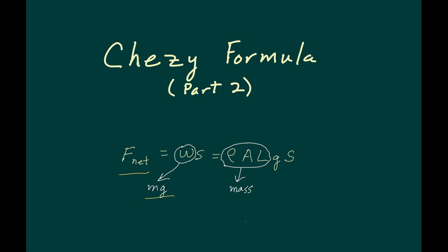Equals density times area times length. And those three, well two variables and one constant, equals mass times gravity times slope. So we have mass times gravity times slope equals mass times gravity times slope.